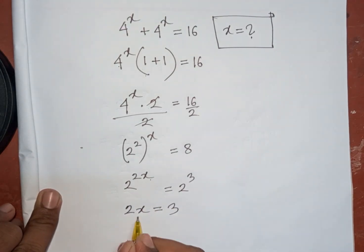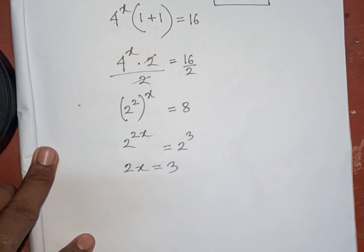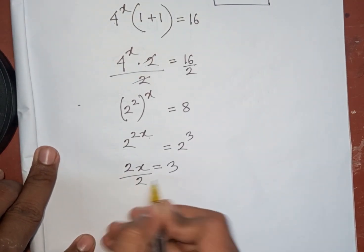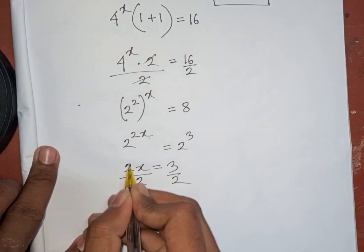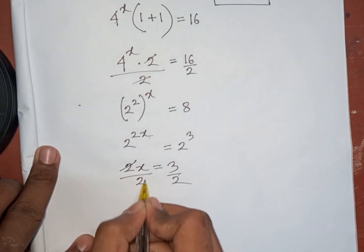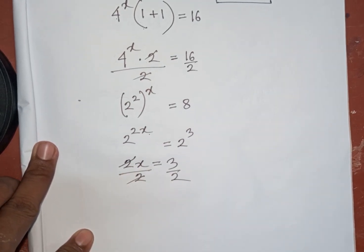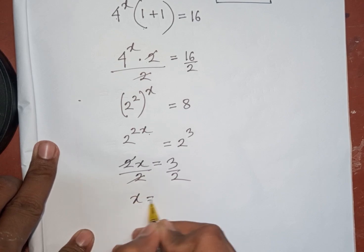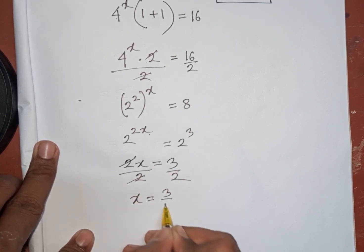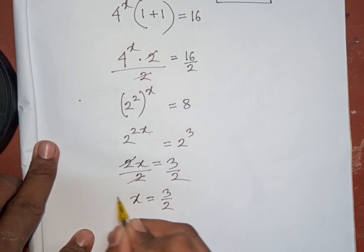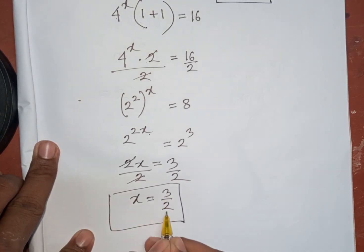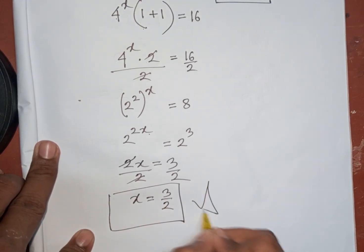Now we need the value of x, so we divide by 2 on both sides. This 2 will be cancelled, so x will be equal to 3 by 2. So 3 by 2 is the value of x — this is our final answer.